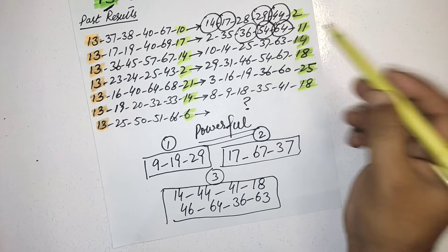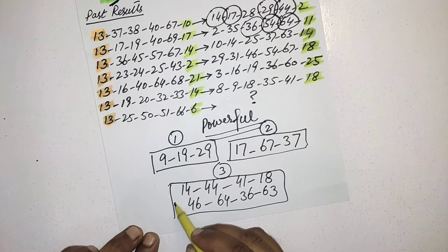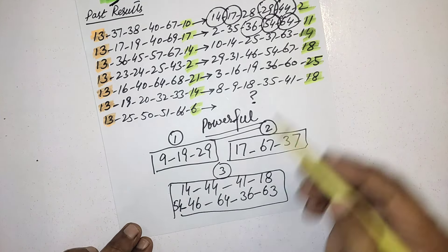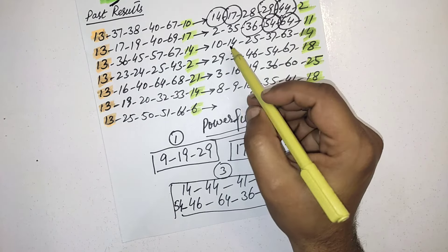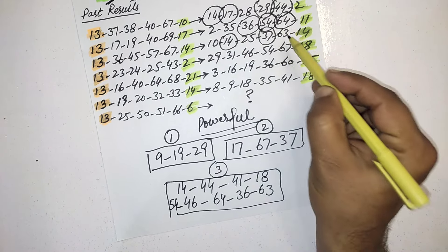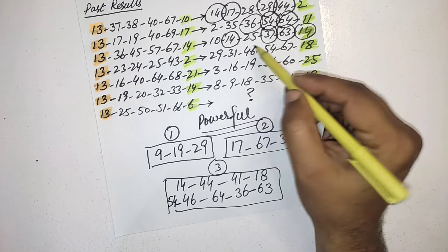Again one number here is missing that is 54. Total 15 numbers, three numbers was made. In third time 14, 37, 63, and 14 again you can see.